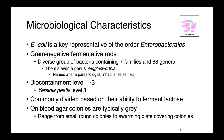All of these organisms are gram-negative, fermentative rods, and within the order Enterobacteriales we have seven bacterial families, including 88 different genera. There's even a genus called Wigglesworthia — it got its name from a parasitologist, and this organism is known to inhabit the tsetse fly. Within the order, we have organisms from biocontainment levels 1 all the way up to Yersinia pestis, which is biocontainment level 3. These organisms are commonly divided based on their ability to ferment lactose, and on blood agar the colonies are typically gray, ranging from small round colonies to large ones that will swarm the entire plate, covering all of the other bacterial growth.